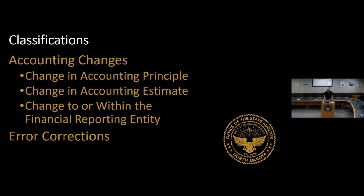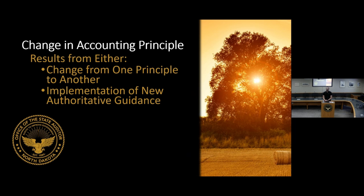There are a couple of classifications that the standard covers: accounting changes and error corrections. Within accounting changes, you're going to have a change in accounting principle, a change in accounting estimate, or a change to or within the financial reporting entity. We'll cover each of those in the next few slides, or you could have an error correction. For a change in accounting principle, these result from either a change from one generally accepted accounting principle to another generally accepted accounting principle.